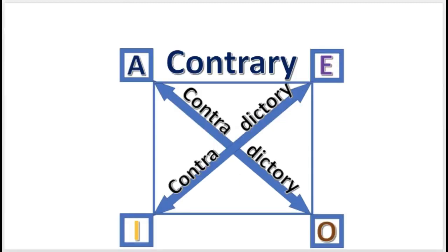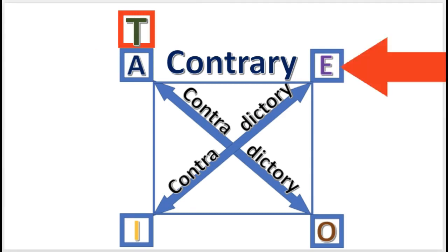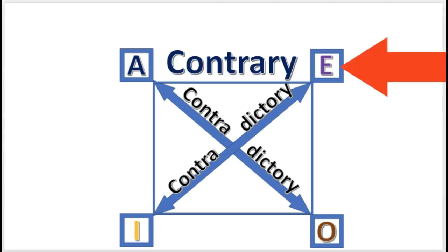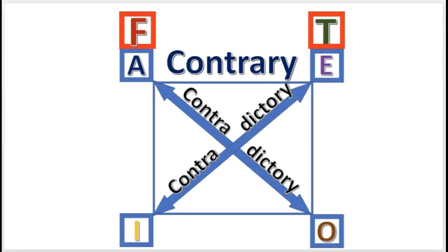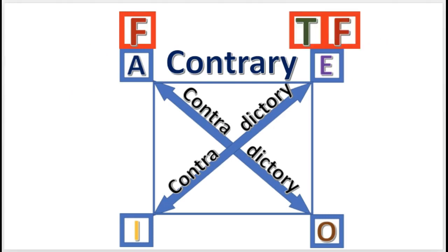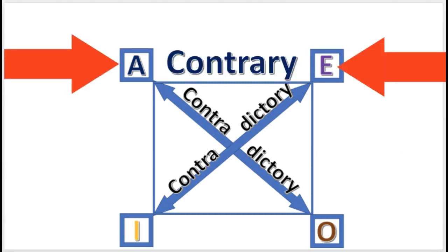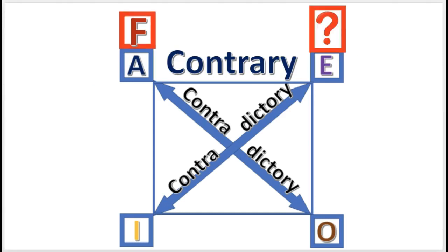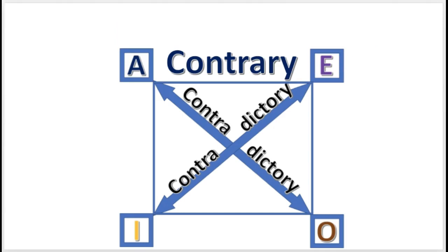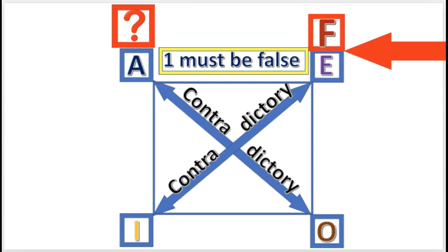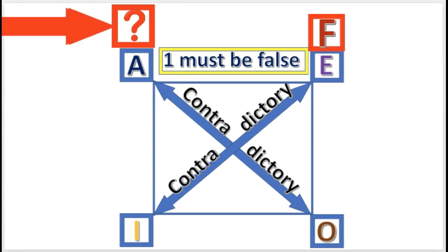For example, if the A proposition is true, then the E is false, because at least one must be false. And likewise, if the E is true, then the A is false. But if the A is given as false, the E could be either true or false, because the rule only says that at least one is false — they very well could both be false. So the E has undetermined truth value. Similarly, if the E proposition is given as false, then the A has undetermined truth value. At least one must be false, and one is already given as false, so the other one could be either true or false.